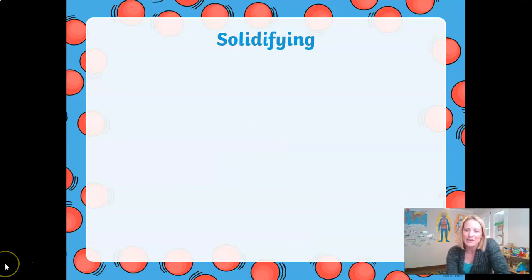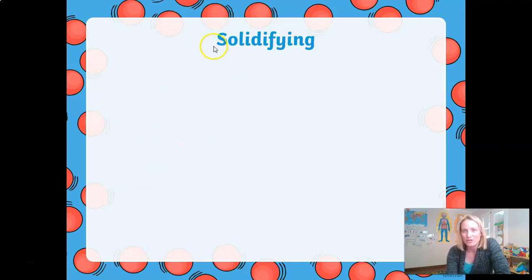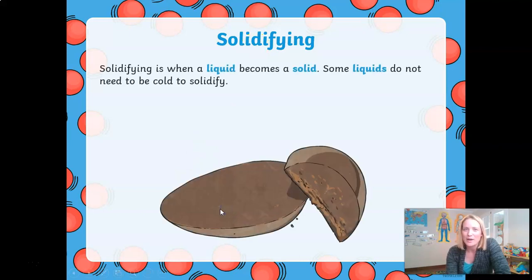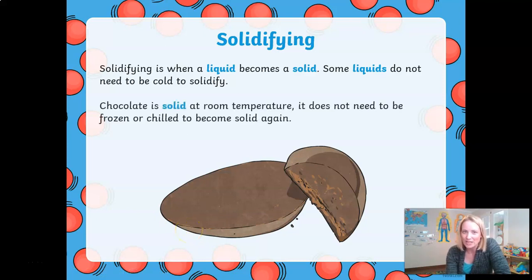That brings us to our final word today — solidifying. You should get a hint about what this means from its name, as it has the word 'solid' at the beginning. Solidifying is when a liquid becomes a solid. Some liquids do not need to be cold to solidify — chocolate is a solid at room temperature and doesn't need to be frozen or chilled to become a solid again. Not all liquids need to be in the freezer or fridge to solidify.